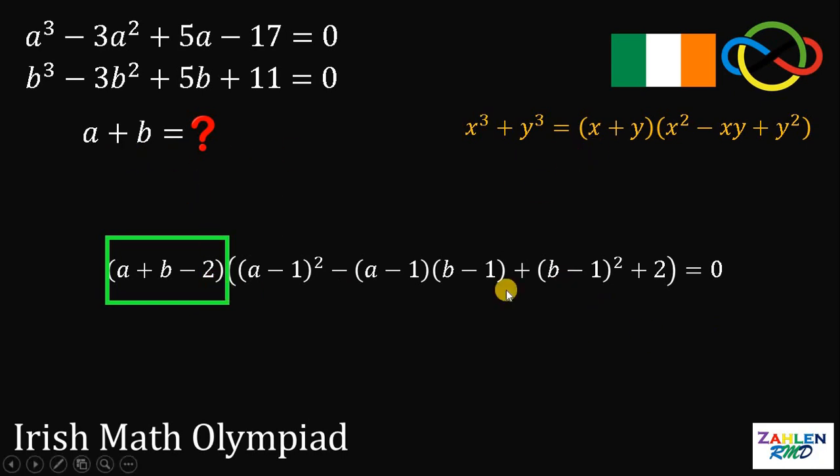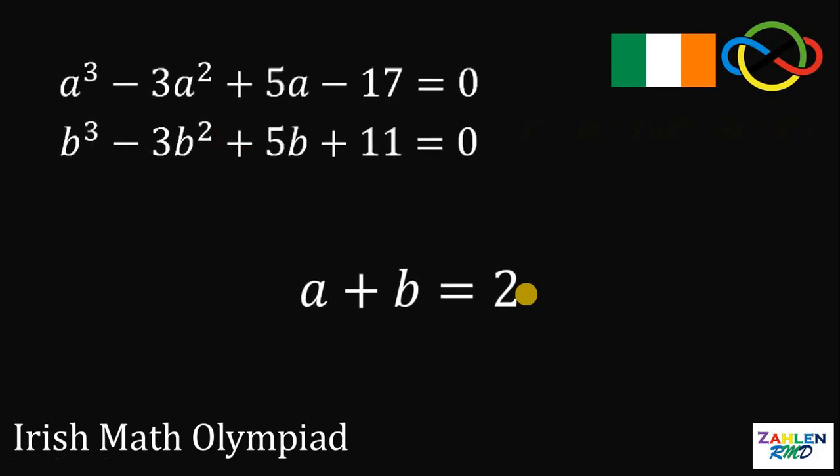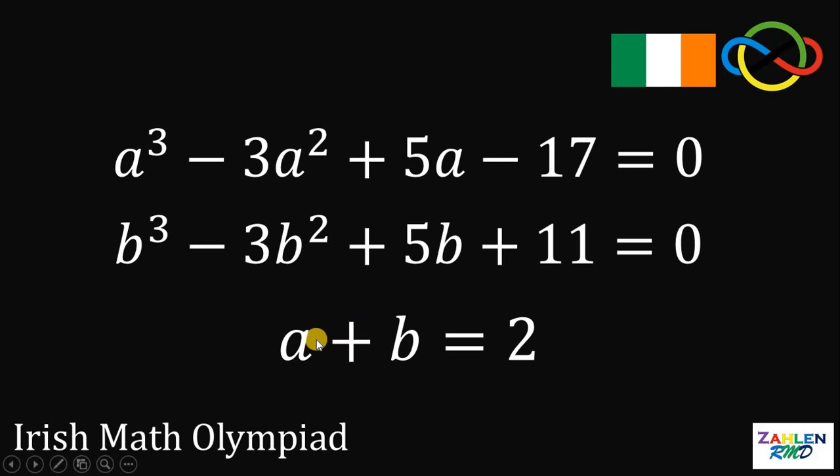Now, if we add 2 on both sides, we get the value of A plus B must be equal to 2. Therefore, given these two equations, then the value of A plus B must be equal to 2.